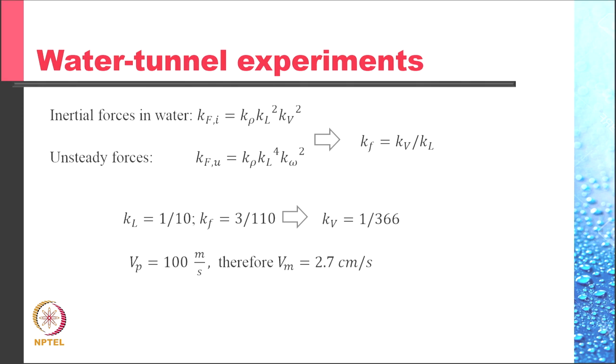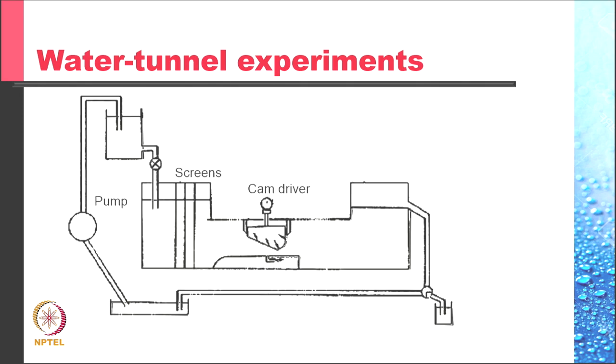So that gives you k_v of 1 by 366. The velocity of the prototype is of the order of 100 meters per second. So therefore, the velocity of the model was 2.7 centimeters per second. We ran the test at that scale. And when the tests were run at that scale, something interesting was seen. Surely, there was shifting of the separation point at this rounded edge. But this was very minor.